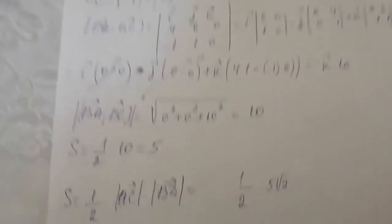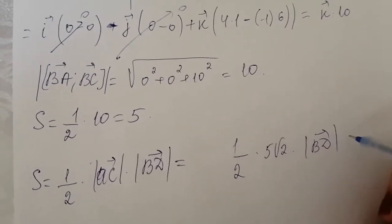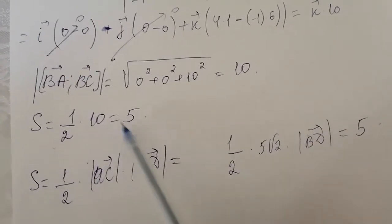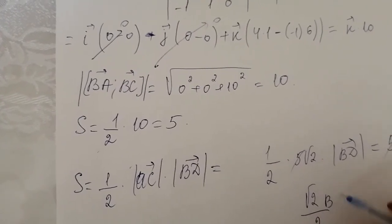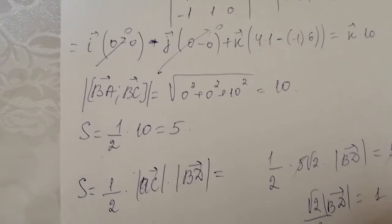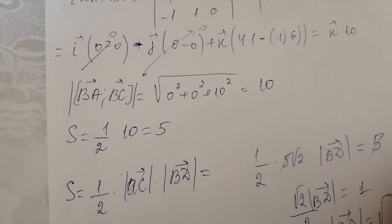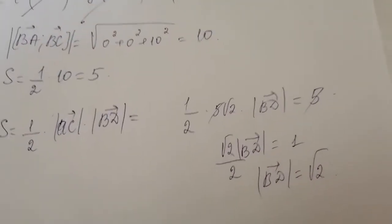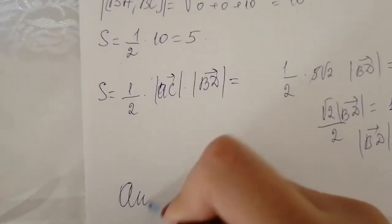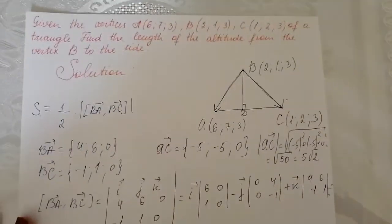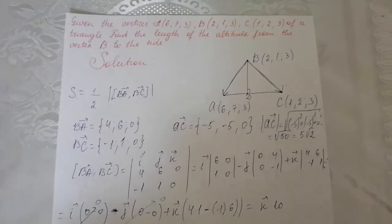We have to find the length of BD. So one half times 5 root 2 times BD equals 5. Solving, the length of BD, the altitude from vertex B to side AC, is equal to square root of 2. The answer to this question is square root of 2.